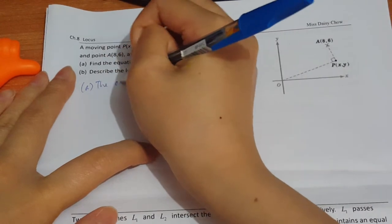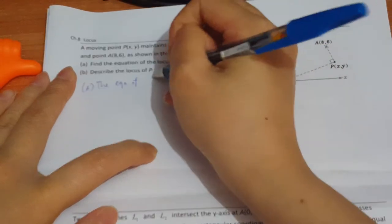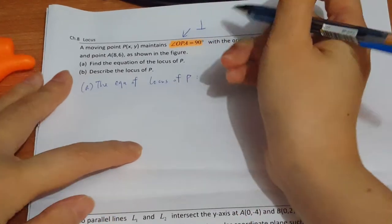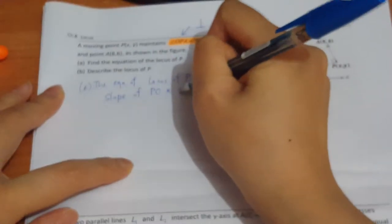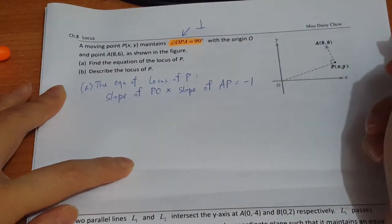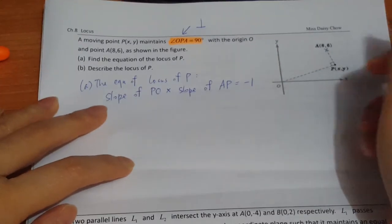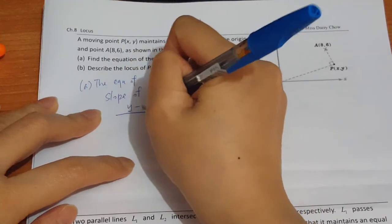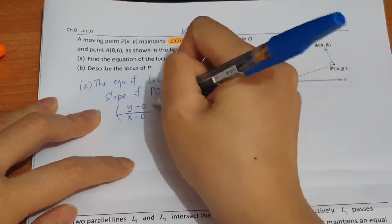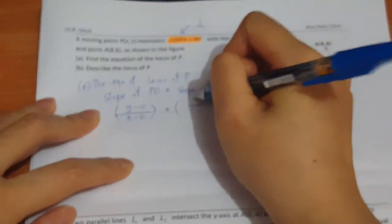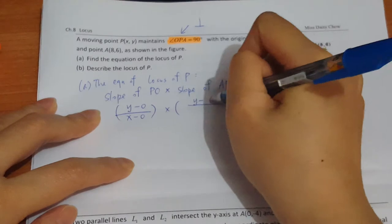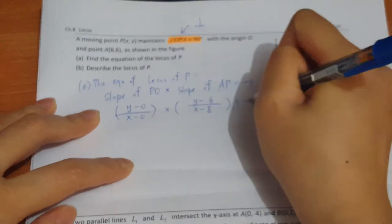So for part A, the equation of locus of P would be the slope of PO times the slope of AP equals negative 1. So the slope of OP would be y minus 0 over x minus 0, and then the slope of AP would be y minus 6 over x minus 8, equals negative 1.